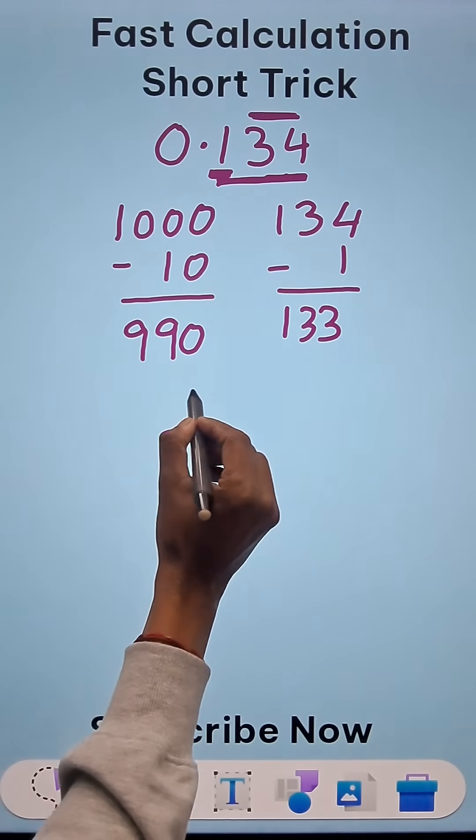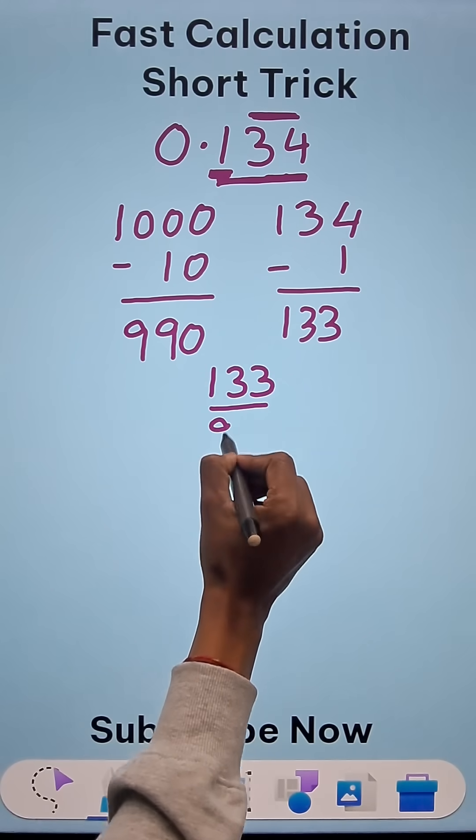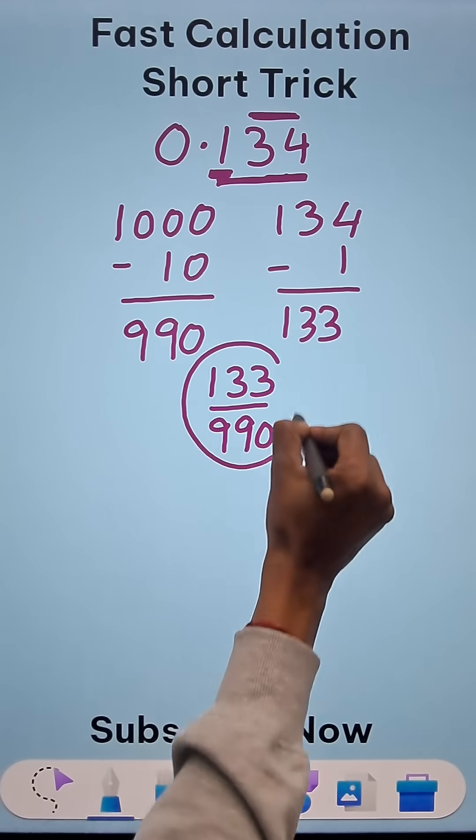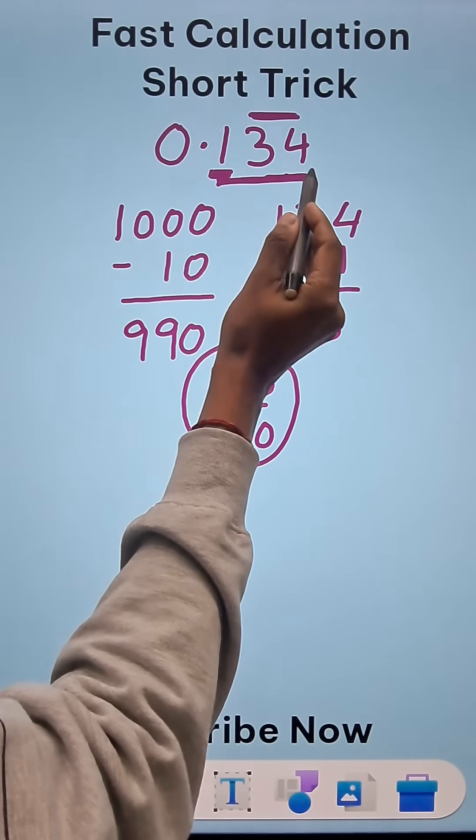Now you can pick up the calculators and check. Your answer will be 133 over 990. This is the rational form of 0.134 bar.